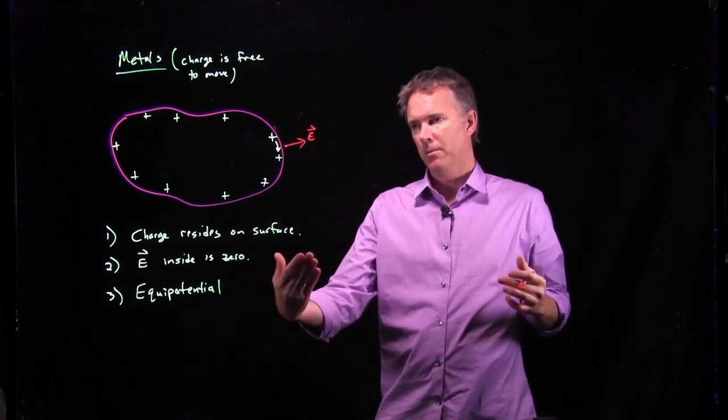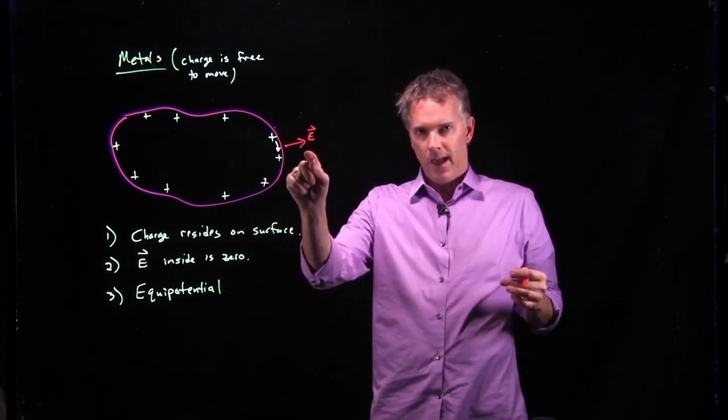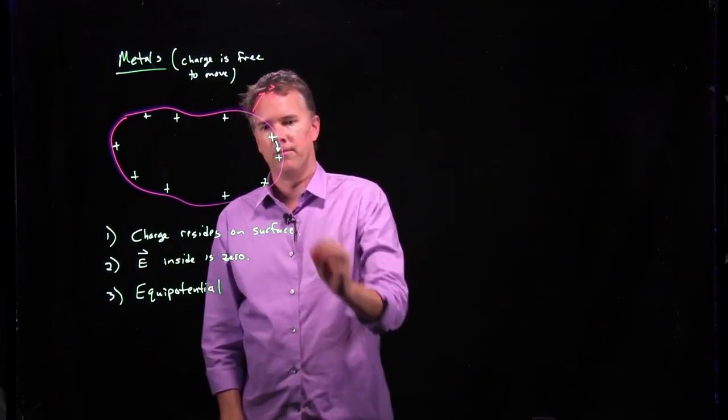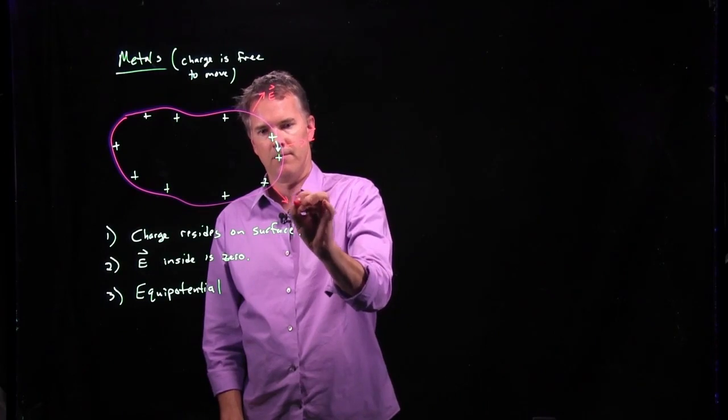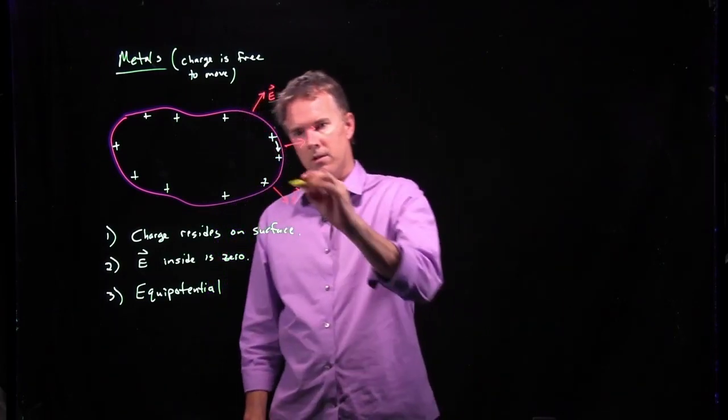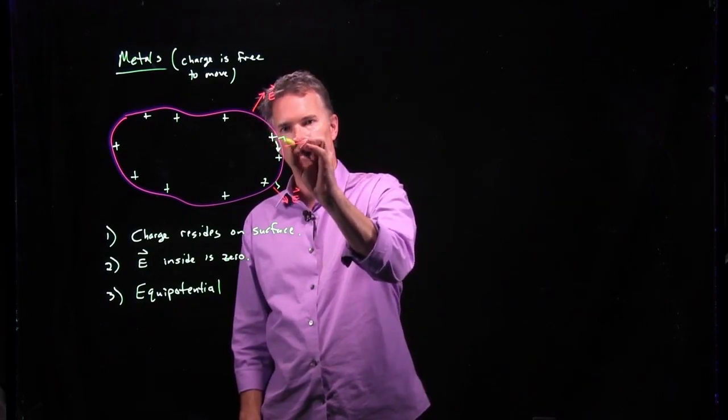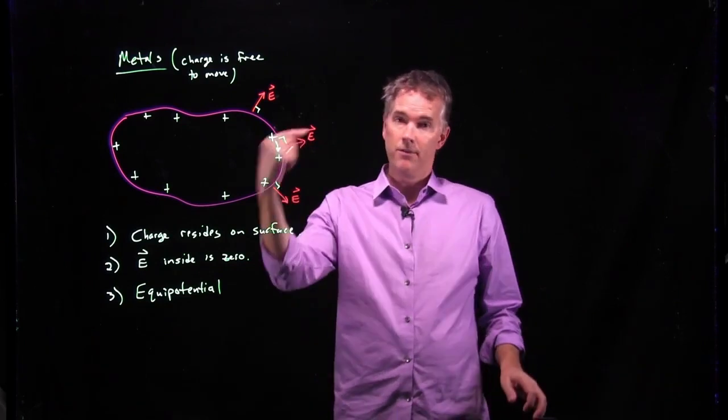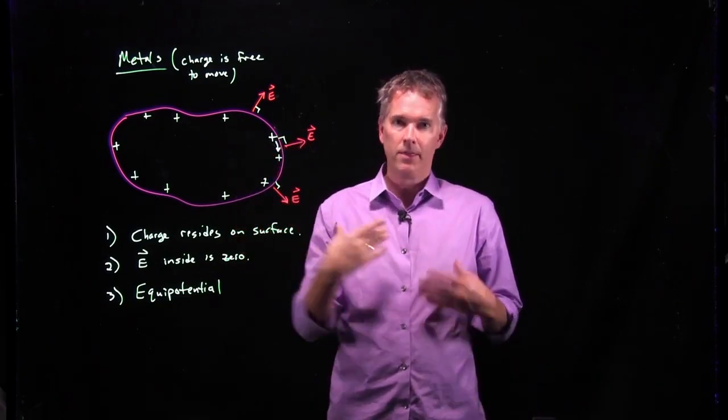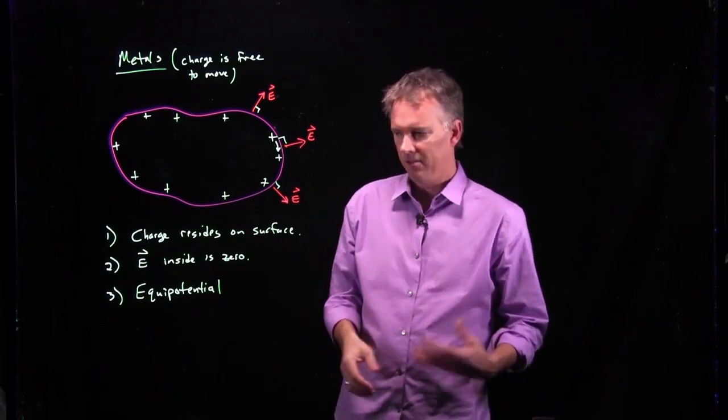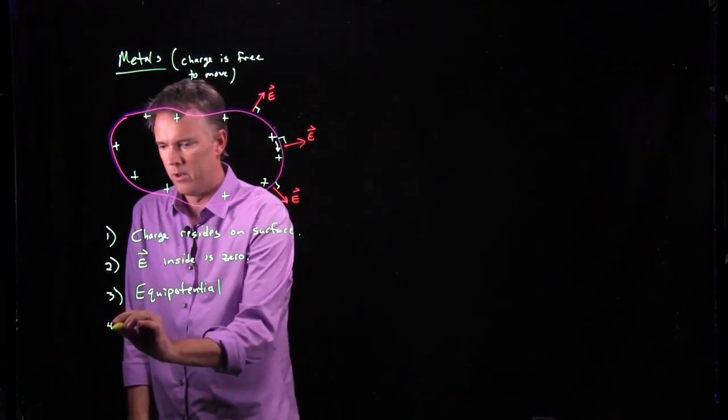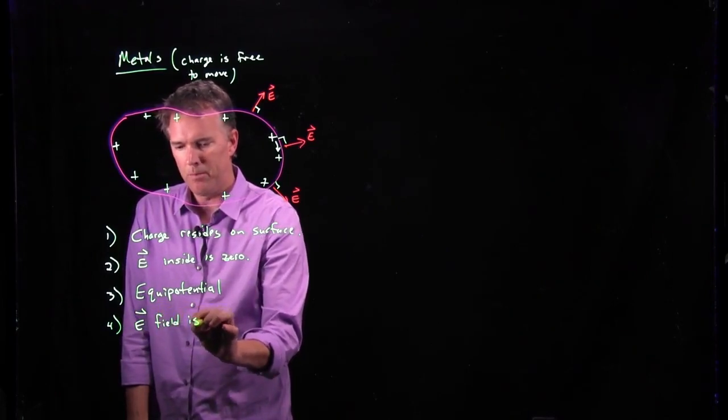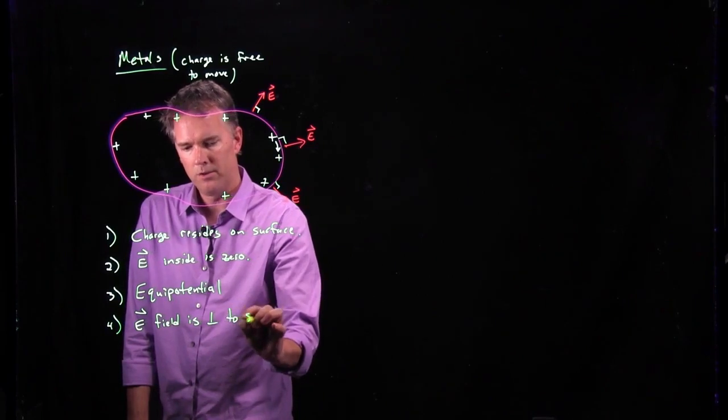So because we're in the static equilibrium case, the E field everywhere has to point at a right angle to the surface. All of these angles are perpendicular. Why? Because if it wasn't, charge would still be moving and then we're not in the static case anymore. So this is another rule for conductors. E field is perpendicular to the surface.